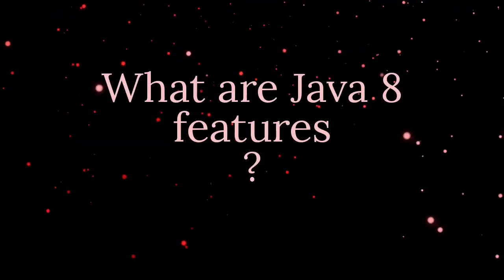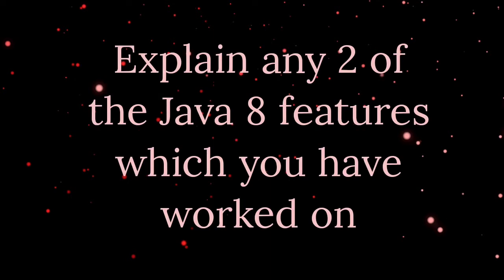The first question was: what are Java 8 features? You can name Optional, Java Stream API, Lambda Expression, Method Reference, and Functional Interface. Explain any two features you have worked on. The most commonly asked questions based on Java 8 are on Stream API, Lambda Expression, and Functional Interface — be prepared for these three concepts.